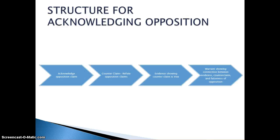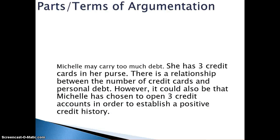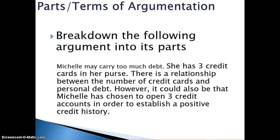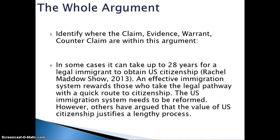This is another chart showing the structure we just went over: we acknowledge the opponent's claim, give a counterclaim, give evidence showing that the counterclaim is true, and then warrant — bringing it all together and showing how the evidence and counterclaim demonstrate that the opposition's claim is not true. This is also a quick comparison between an argumentative essay and a regular essay — fairly similar. We do some different things and call some sentences different things, but it's pretty easy if we're honest with ourselves. For the final activity, please go ahead and break down the arguments in the last two slides into their component parts: claim, evidence, warrants, counterclaims, and the like. Thanks for your time today — hopefully you learned something.